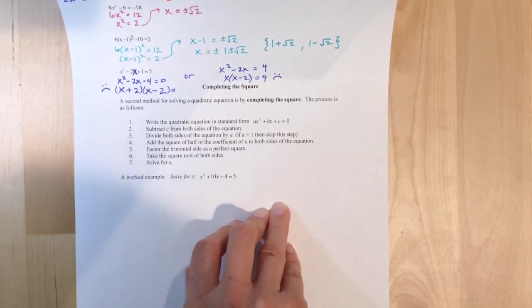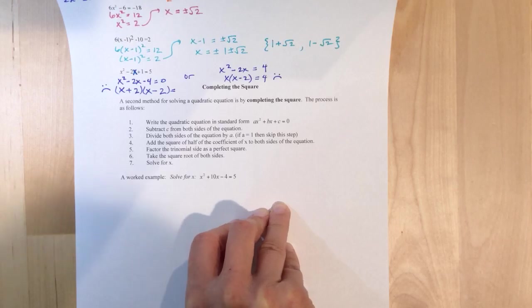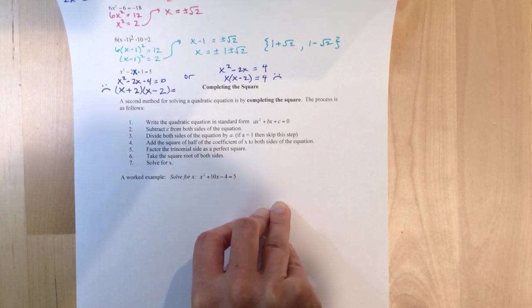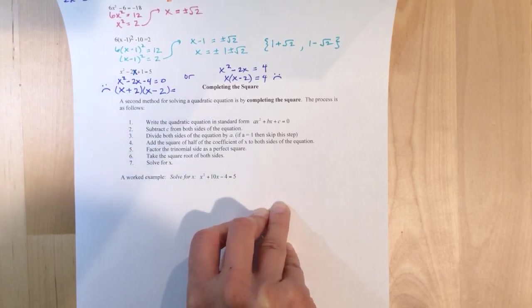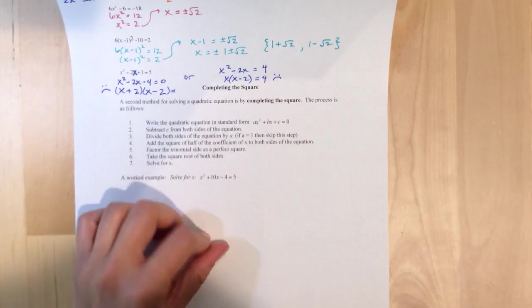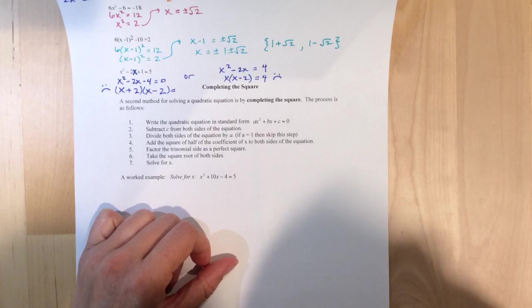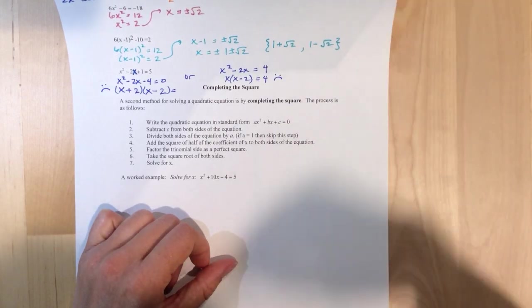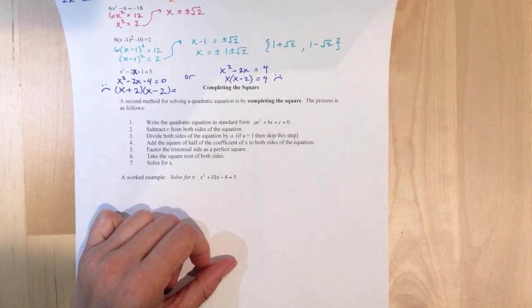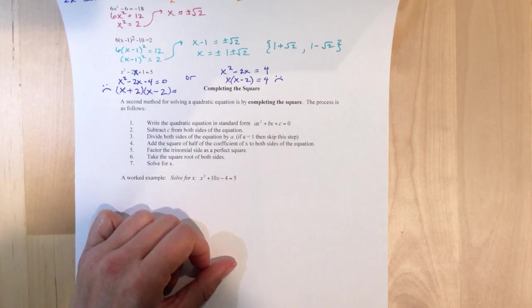A second method for solving a quadratic equation is by completing the square. The process is as follows. Write the quadratic equation in standard form ax squared plus bx plus c equaling 0. Then subtract c from both sides of the equation. Divide both sides of the equation by a. If a equals 1, then just skip this step. Add the square of half the coefficient of the x to both sides of the equation. Factor the trinomial side as a perfect square. Take the square root of both sides. And last, solve for x.